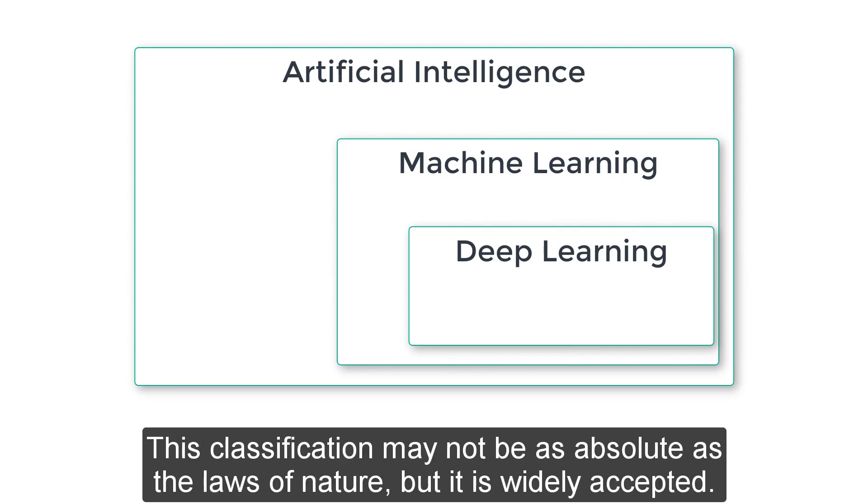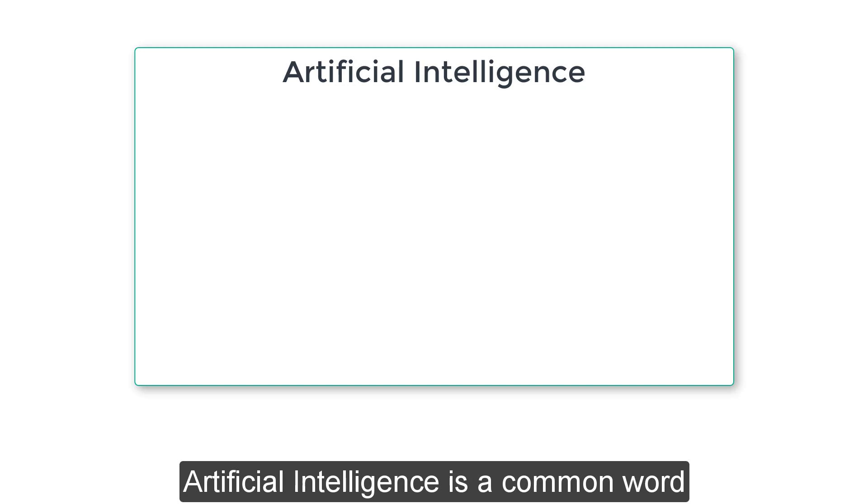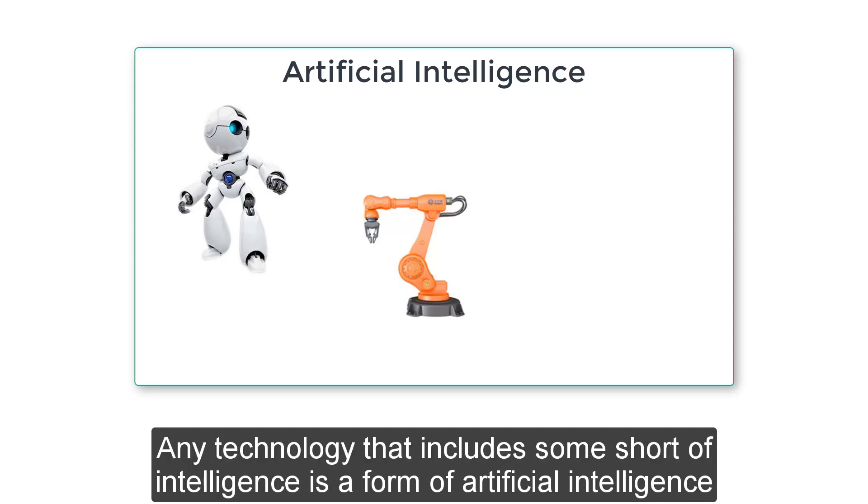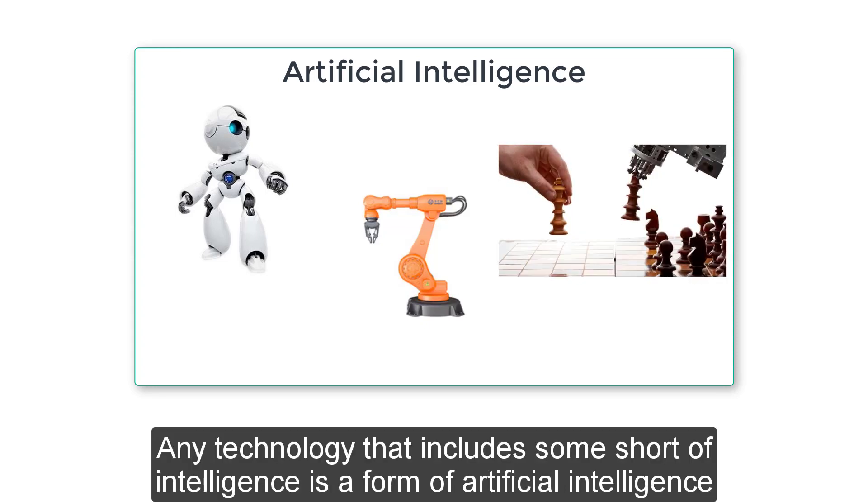This classification may not be as absolute as the laws of nature, but it is widely accepted. Artificial intelligence is a very common word, and it may imply many different things. Any technology that includes some sort of intelligence is a form of artificial intelligence.